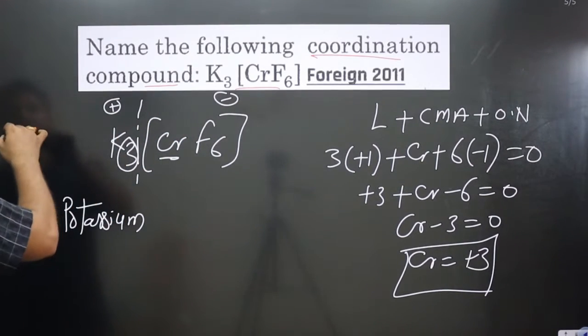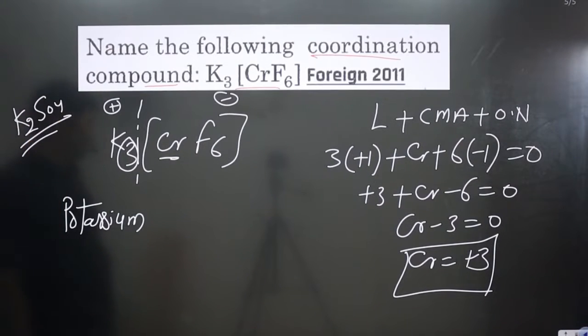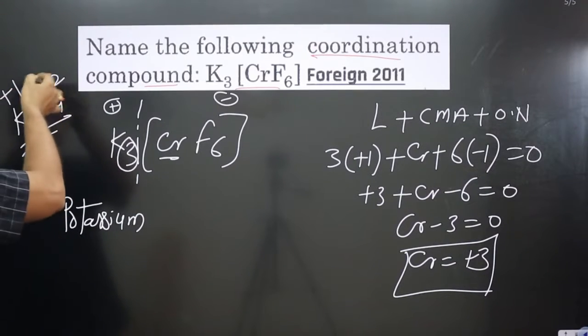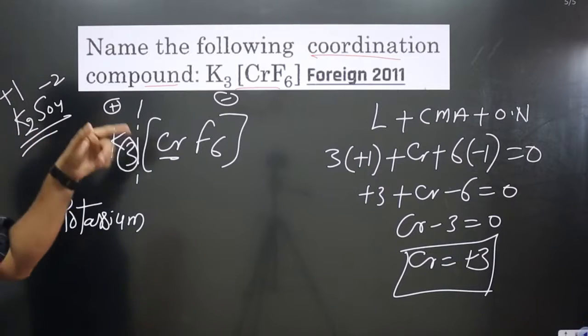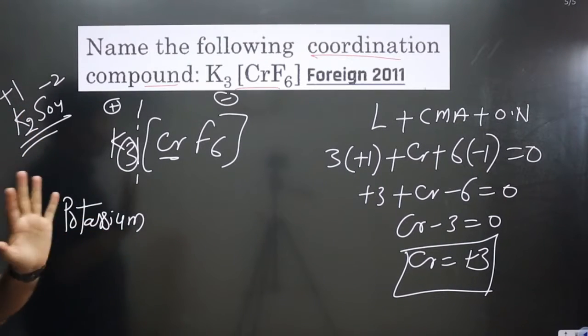This number is coming only by balancing the charge. Like if we have K₂SO₄, we cannot say dipotassium sulfate. Two is coming by balancing the charge because sulfate is minus two and potassium is plus one. When we cross these numbers, we get K₂, so we do not say dipotassium sulfate, we say potassium sulfate. Similarly, we use only potassium.